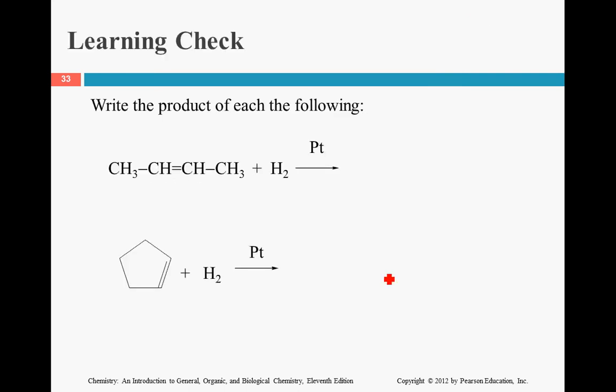All right, so if we're going to write the product, here's the double bond. We're going to take away that double bond. CH3. Instead of having CH, it's now CH2. Instead of CH, it's now CH2, CH3. And here there's the double bond there. They're now all single bonds.